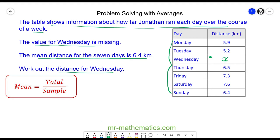So the sum of the six days is 38.9 kilometers plus Wednesday, which we're calling x. We're dividing this by 7, which is the seven days in a week, to give a mean average of 6.4 kilometers.